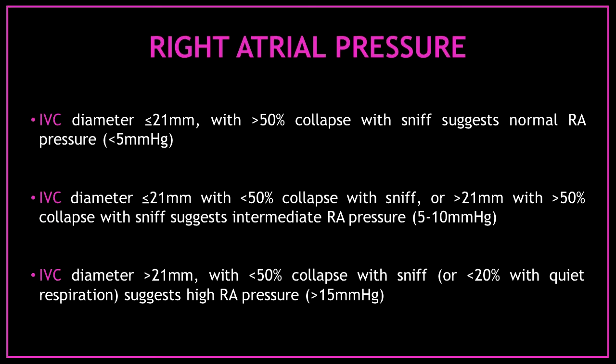Here is how you estimate the right atrial pressure numerically. If the inferior vena cava is normal size with an inspiratory collapse more than 50%, the right atrial pressure is less than 5 mmHg. If the inferior vena cava is normal size but the inspiratory collapse is less than 50%, the estimated right atrial pressure is between 5 and 10 mmHg. And if the inferior vena cava is dilated with an inspiratory collapse less than 50%, the estimated right atrial pressure is more than 15 mmHg.